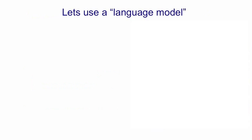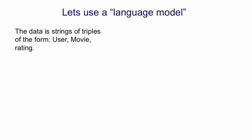Let's start by trying to use a language model. It sounds bizarre, but as you'll see, it's equivalent to a standard method. We can write the data as a string of triples, much like family trees. Each triple has the form: user, movie, and rating.